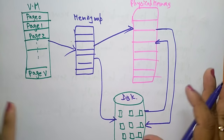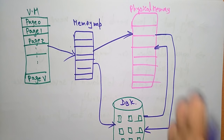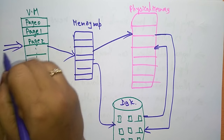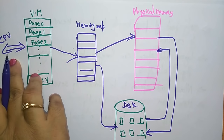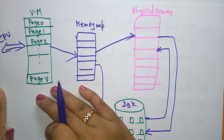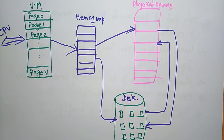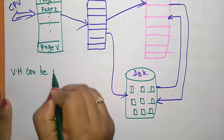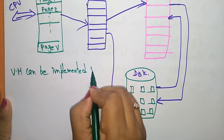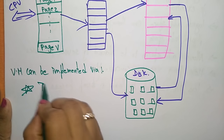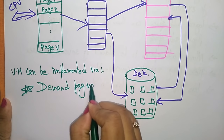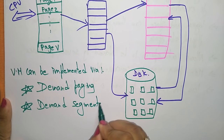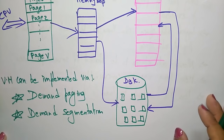This is how the process is done inside the operating system — how virtual memory, physical memory, and the disk interact. The CPU sends or receives data with the help of the virtual memory concept. Virtual memory can be implemented via demand paging and demand segmentation. We will look at what demand paging and demand segmentation are in the coming videos. Thank you.